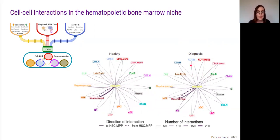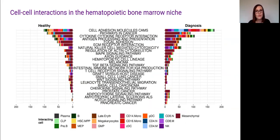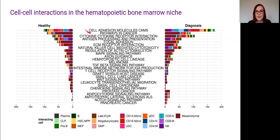We then tried to figure out what these interactions might be doing and what pathways might be involved. We annotated the ligand and receptor genes with KEGG pathways and looked to see which pathways were most common at the different time points. Again, we see a similar pattern at the different time points, with the most frequent pathways being common between the two. However, cell adhesion, cytokine receptor, and natural killer cell-mediated cytotoxicity pathways were much more frequently annotated in the diagnosis samples compared to the healthy samples.